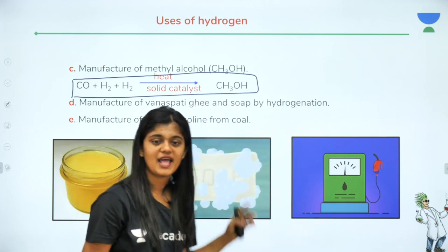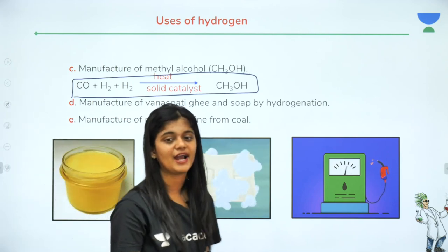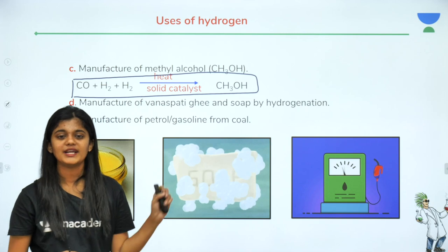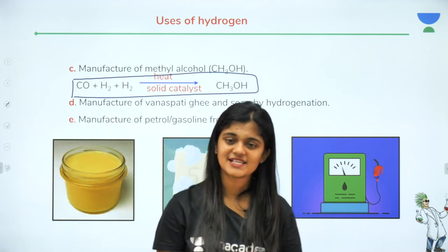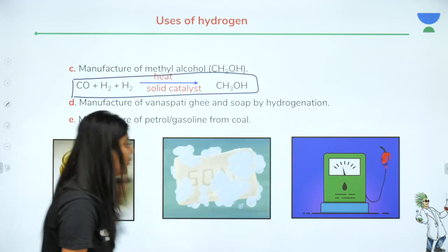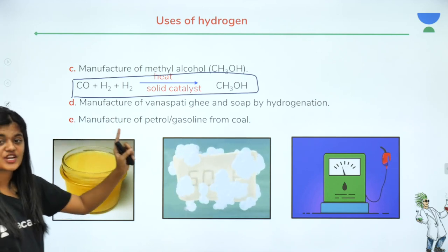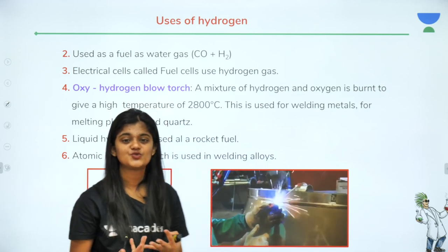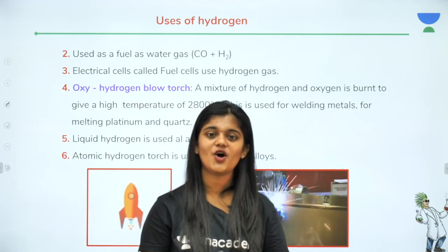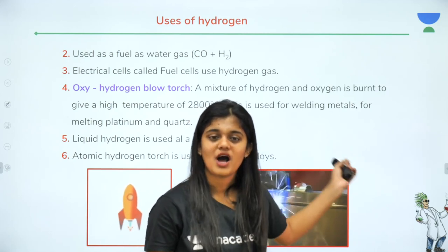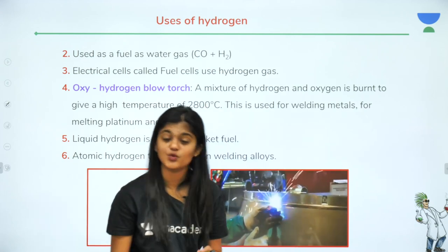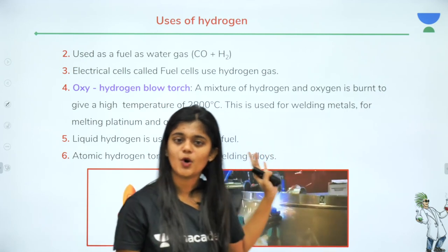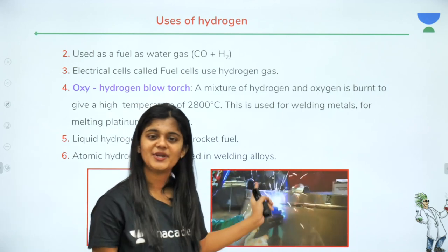Fourth: hydrogen is used in the manufacture of vanaspati ghee and soap by hydrogenation — passing hydrogen gas through fats forms vanaspati, and soap can also be formed via hydrogenation. Fifth: it is used in the manufacture of petrol or gasoline from coal. Sixth: it is used as fuel in water gas, which is a 1:1 mixture of carbon monoxide and hydrogen — water gas is a good alternative fuel when you don't want to use fossil fuels.